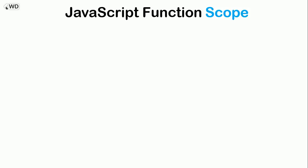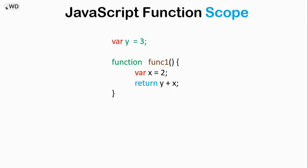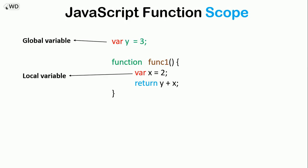Now let's talk about JavaScript function scope. Say we have a variable y equals 3 and a function called func1. Inside it we have a variable x equals 2 and it returns y plus x. The variable y is defined outside the function — we call it a global variable. The variable x is defined inside the function — we call it a local variable. When we call the function it will return 5, meaning the function has access to both the global and the local variable.